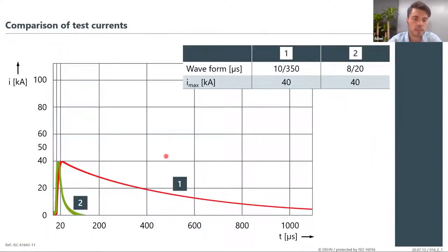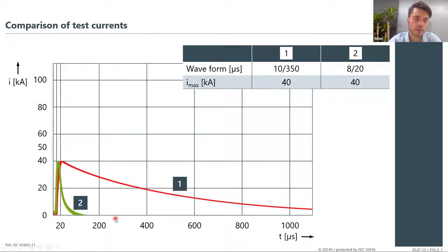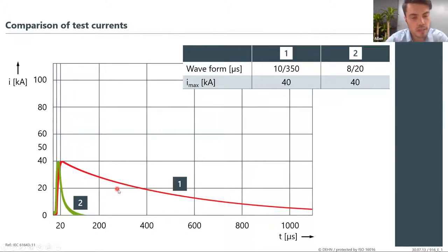As described earlier, a lightning waveform is described as a 10/350, indicated by the red graph, and an 8/20 surge current shown in the green line. This next slide will indicate the differences between these two graphs and why it's important to install the correct SPDs depending on the expected lightning current.